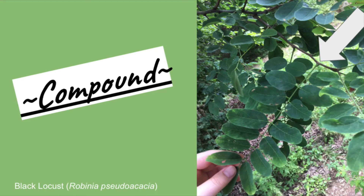Here I found a black locust which is a good example of a compound leaf. Compound leaves have a bunch of different leaflets. One thing to look for when deciding if it is a simple or compound leaf is to look for the leaf bud — all leaves have a bud at their base. There aren't any buds at the base of leaflets. The arrow is pointing to the bud of this leaf.